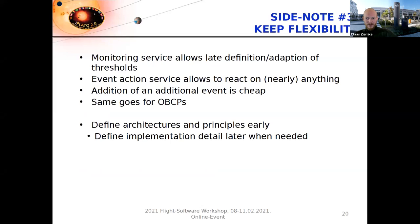One of the lessons learned here is: keep your flexibility as long as possible. The monitoring service allows us to define thresholds for our parameters very late in the project. The event action service allows reacting to nearly everything that can happen, and it is very cheap to add a specific event packet. The onboard control procedures use a scripting language where you can define specific operational sequences later. So we defined the architectures and principles very early in the project, but implementation details only later when we actually need to define them.